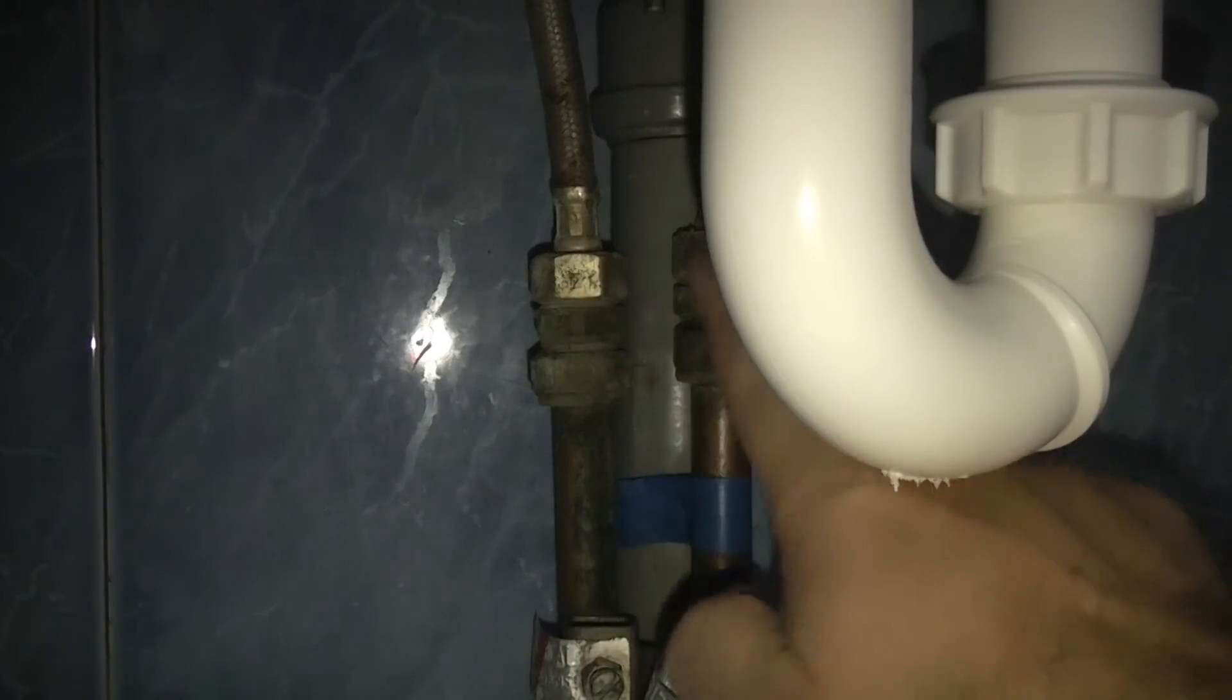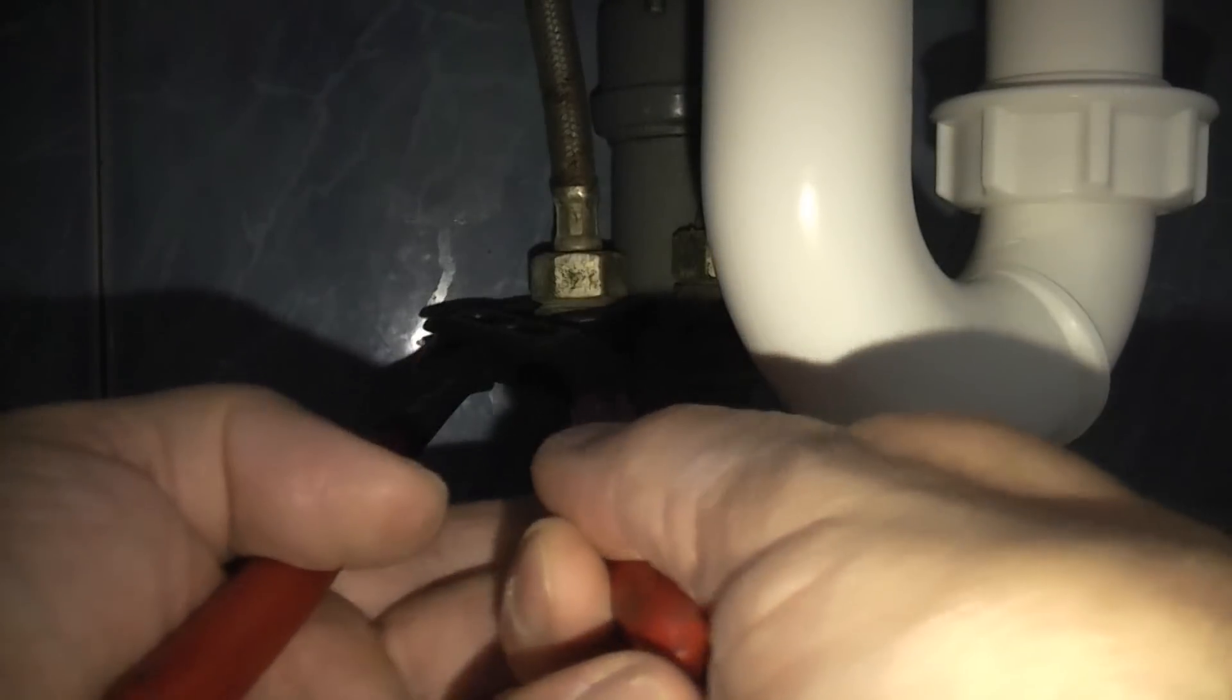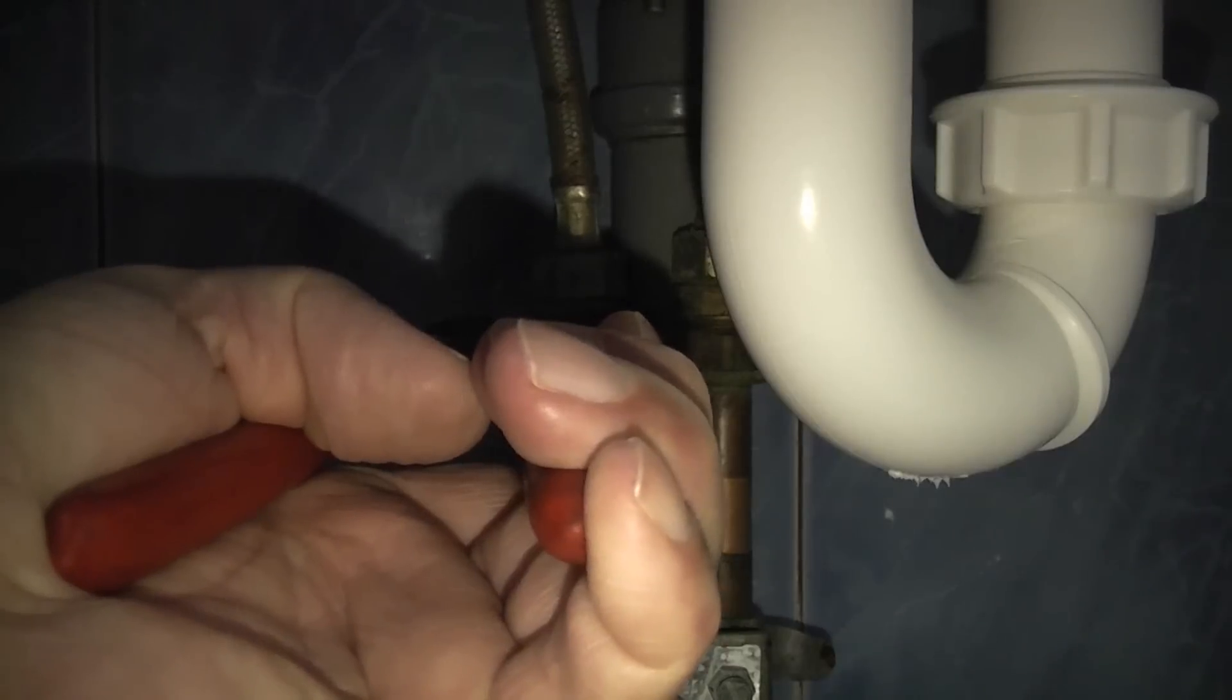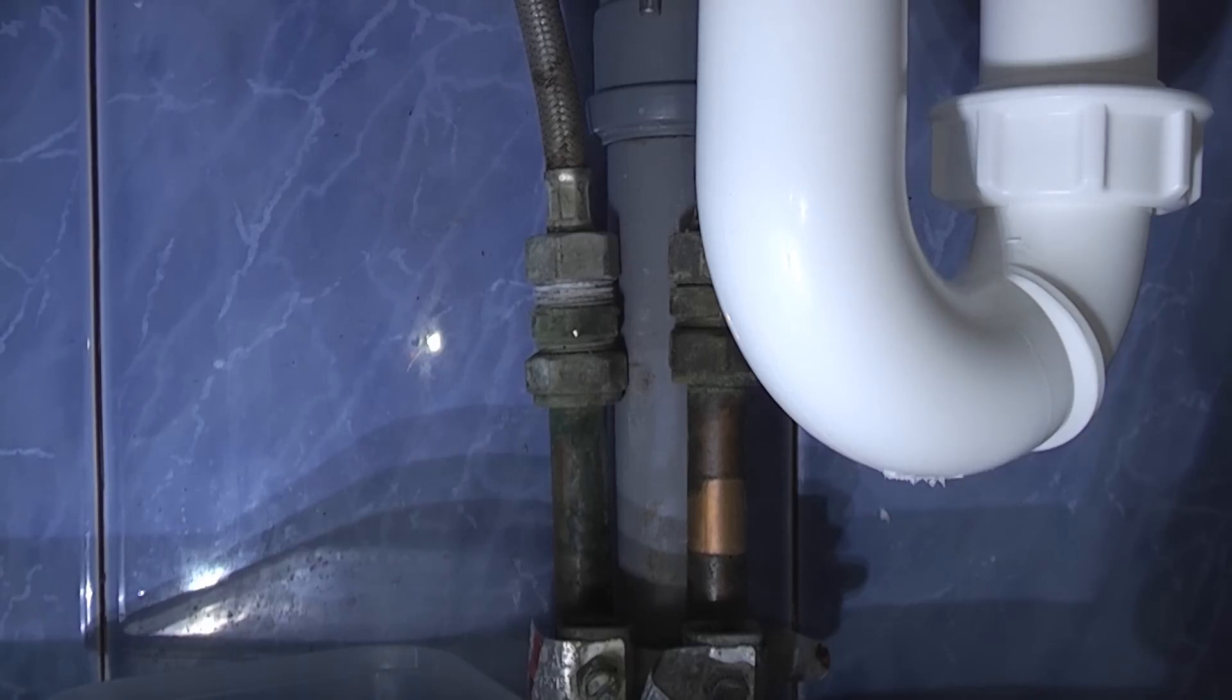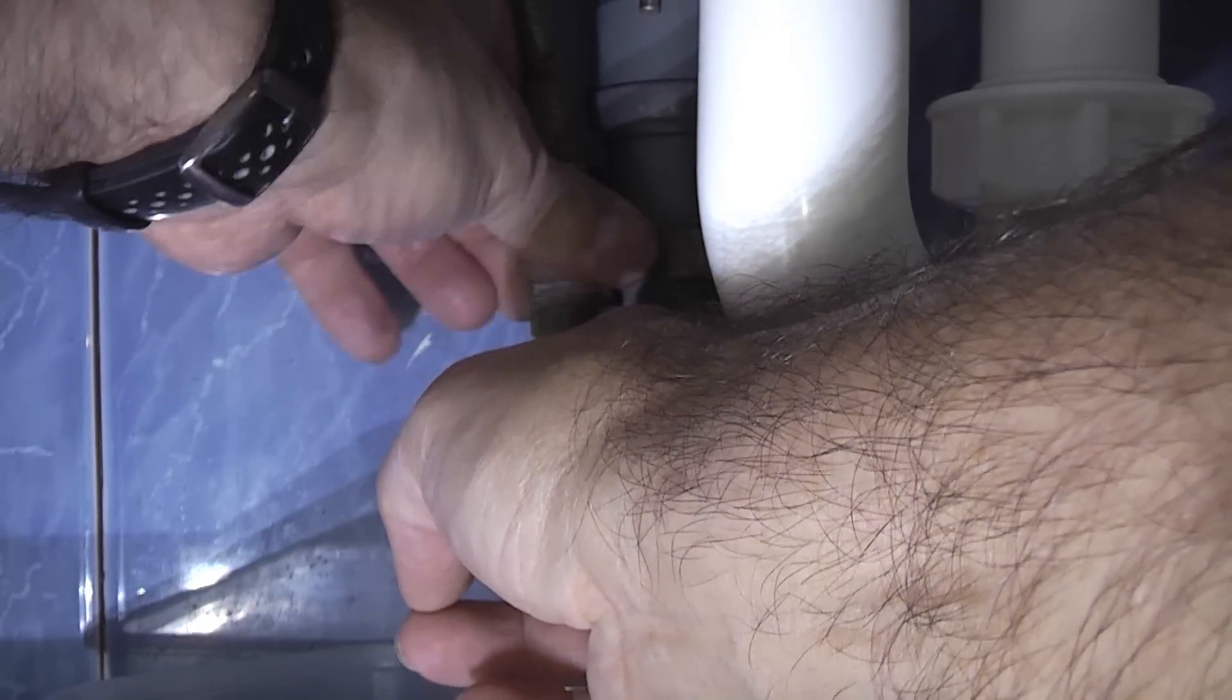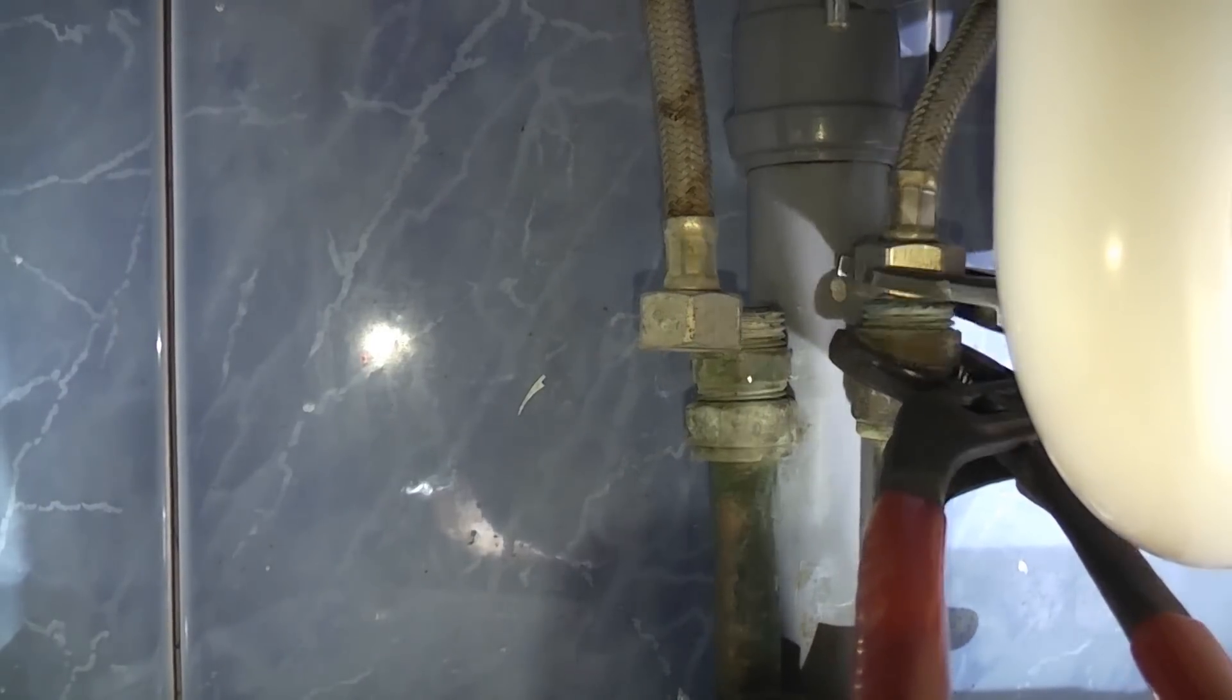So we now need to undo the two flexes that are on there and if you look at the flexes they are not in brilliant condition. So I'm just going to take some water pump pliers, I'm going to grab that part, I'm going to take the adjustable and I'm going to undo the nut on the flexi. And I'll just switch the torch on there, it might get the light a bit better. So basically we're undoing that nut and then you just need to do the same on the cold.